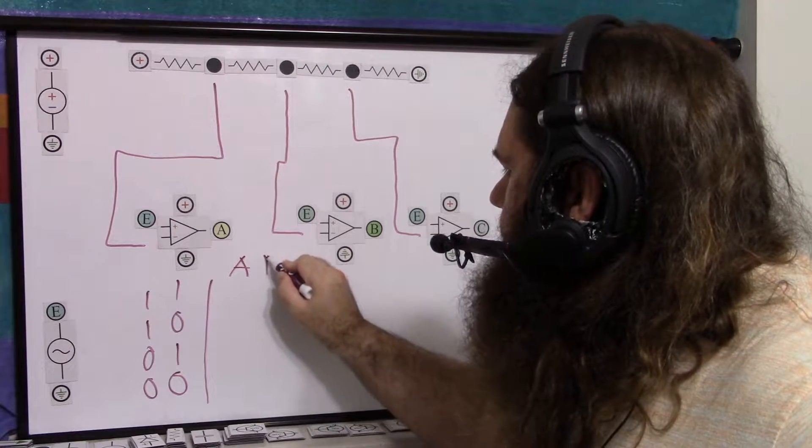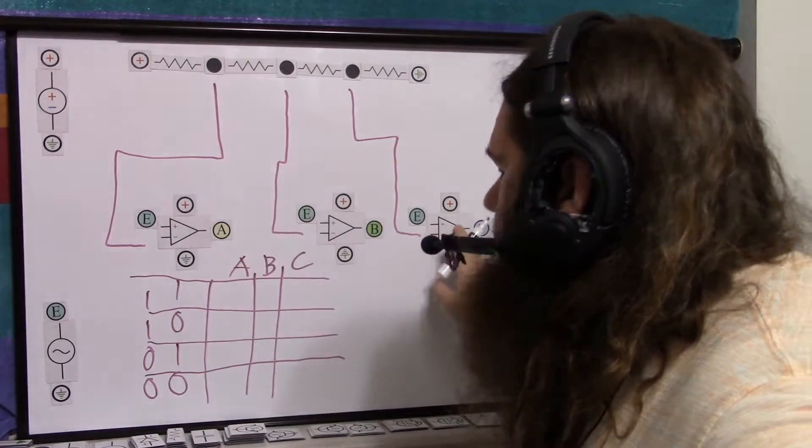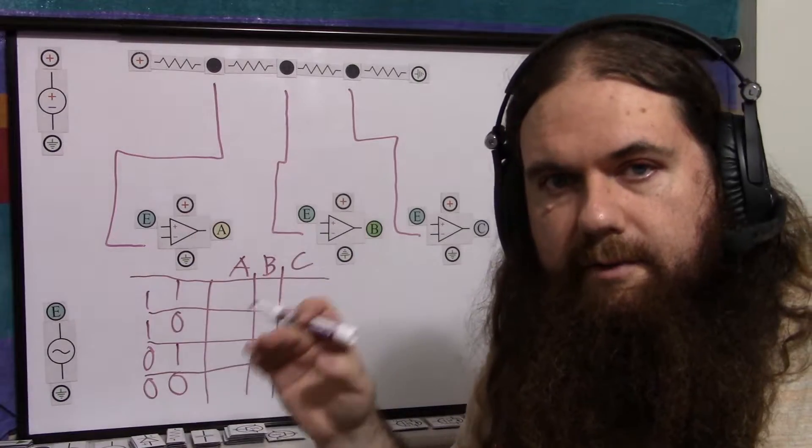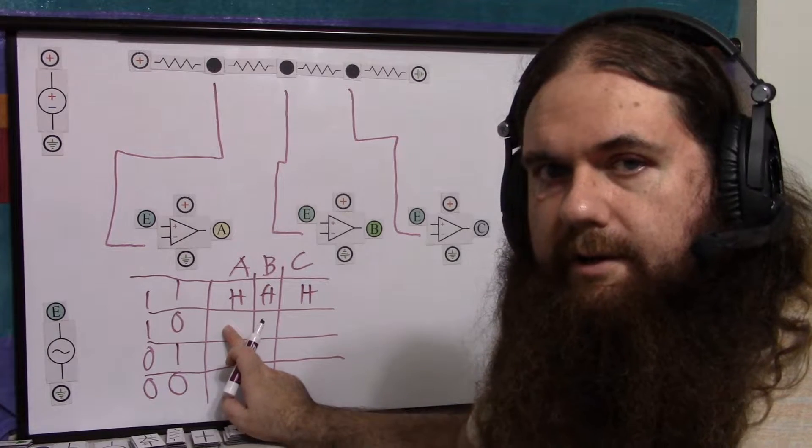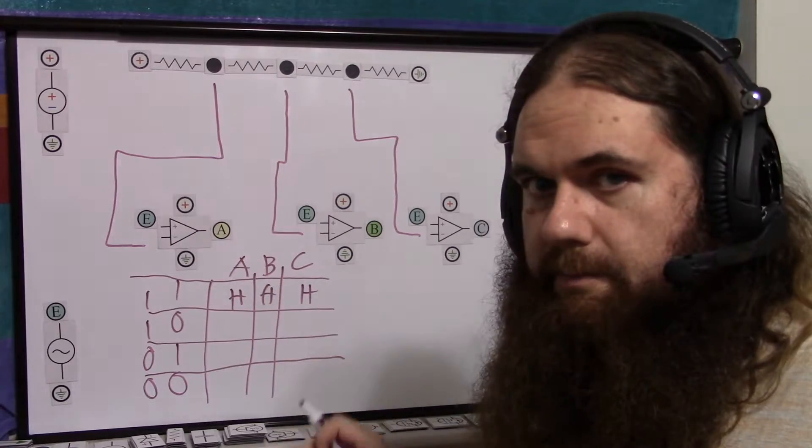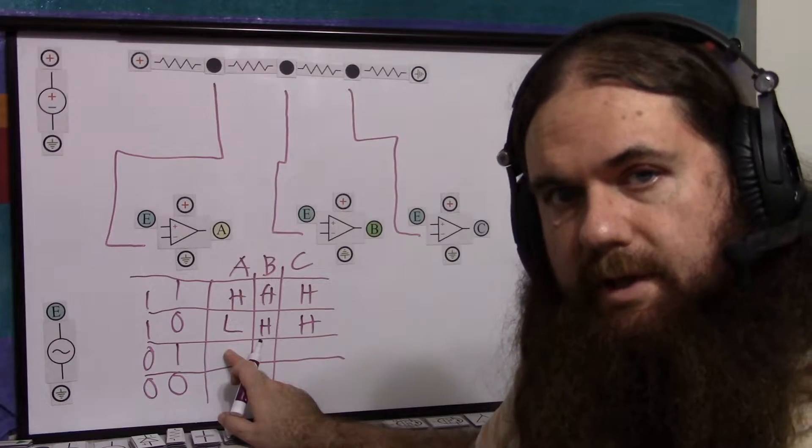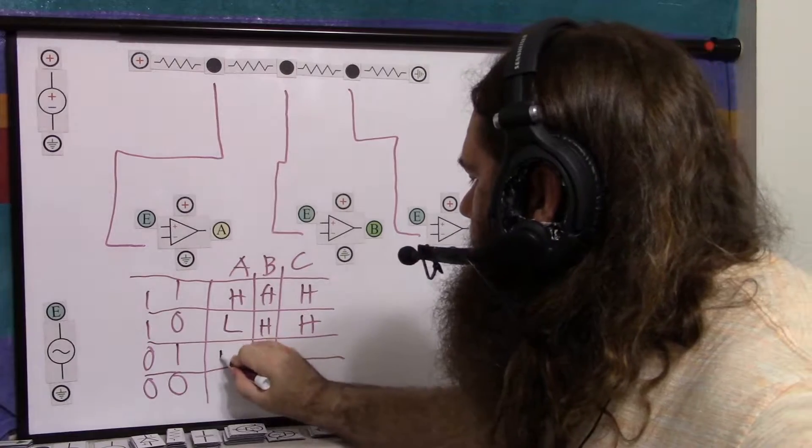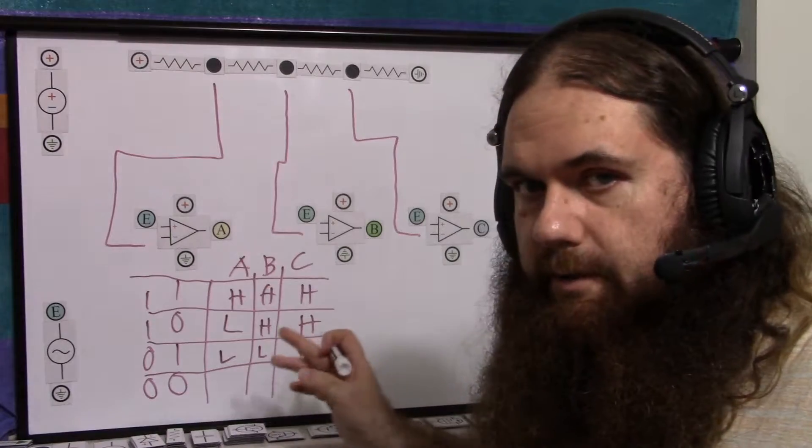So we have four possible outcomes. And then the values for A, B, and C for each of these. If the voltage is greater than three quarters, then all of these are going to be true. Because they're saying, is the input signal greater than my reference voltage? So we're going to get high, high, and high. If the voltage is greater than two quarters, but not greater than three quarters, then A is going to be low, but the other two will still be high. If it's greater than one quarter, but not greater than two quarters, then both of these are going to be low, but the last one will still be high. And if it's not greater than one quarter even, then all of them are going to be low.